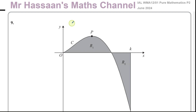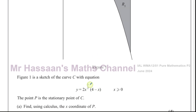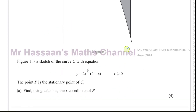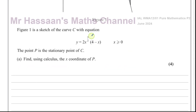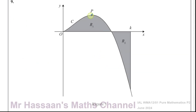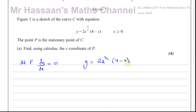We have question part 9a. It says figure 1 is a sketch of the curve with equation y equals 2 times x to the power of 3 over 2 times 4 minus x, where x is greater than 0. The point P is the stationary point of the curve C. Find, using calculus, the x-coordinate of P. A stationary point is a point of zero gradient, so at P the gradient dy/dx is equal to 0.